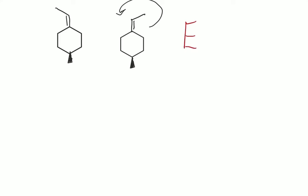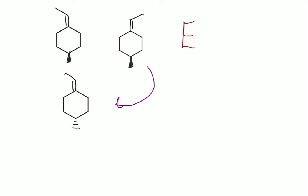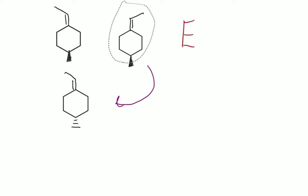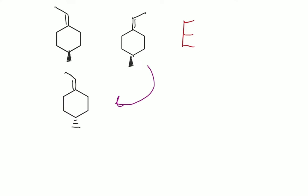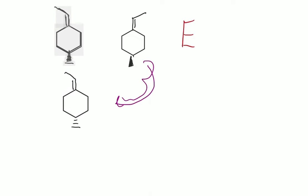So that way we can judge the orientation of the chiral center. If we move this one down here, we get this. Notice we didn't just slide this over, because that doesn't line up. What we did was flip it sort of like a pancake, so that we can turn this around to line up with this.